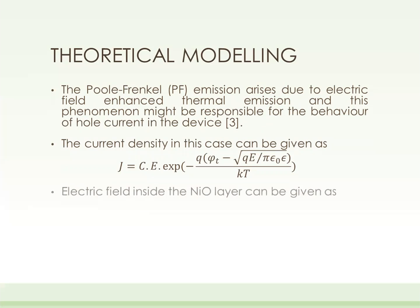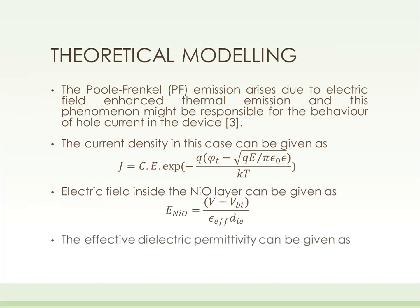The electric field inside the NiO layer can be given as this equation, where V_BI is the built-in potential, which can be given as the difference between the work function of ITO, NiO, and aluminum cathode. The effective dielectric permittivity can be found with this equation, where D_total is the inter-electrode distance.